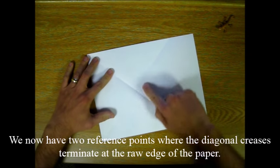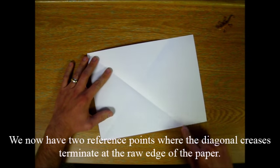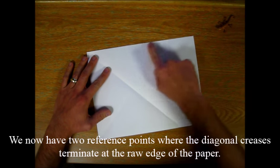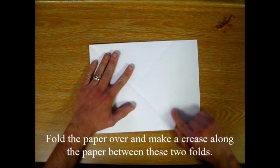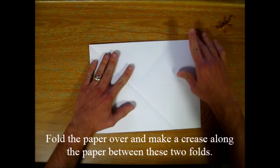We now have two reference points where the diagonal creases terminate at the raw edge of the paper. Fold the paper over and make a crease along the paper between these two folds.